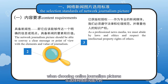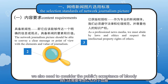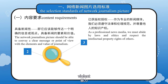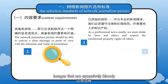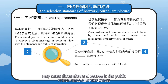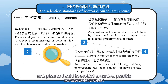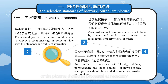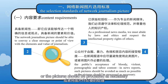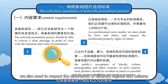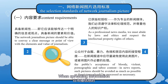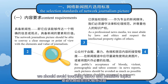Finally, when choosing online journalism pictures, we also need to consider the public's acceptance of bloody, violent, pornographic, and taboo content. Images that are excessively bloody, violent, or pornographic may cause discomfort and nausea in the public. In news reports, such pictures should be avoided as much as possible, or the pictures should be processed as necessary. In addition, when choosing internet journalism pictures, we also need to respect the differences of different regions and cultures, and avoid touching taboo and sensitive topics.